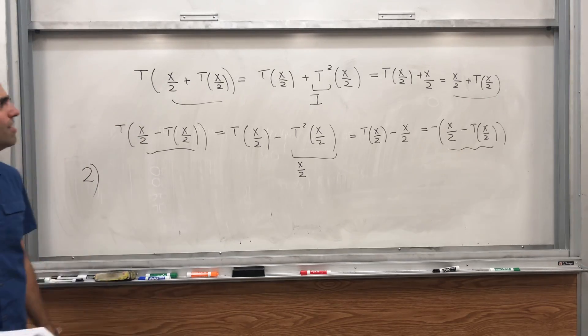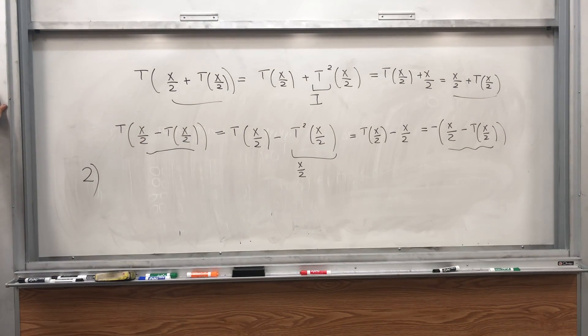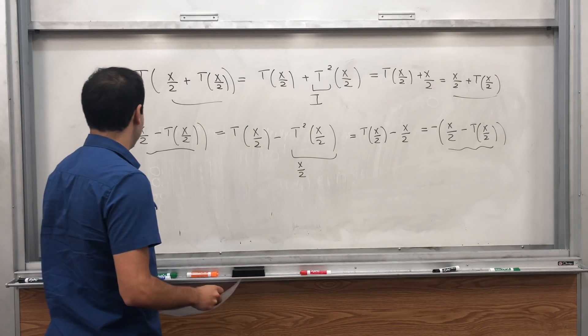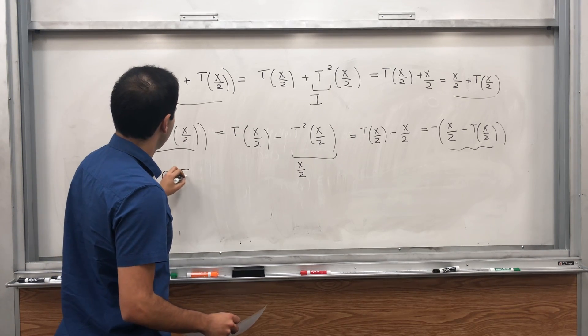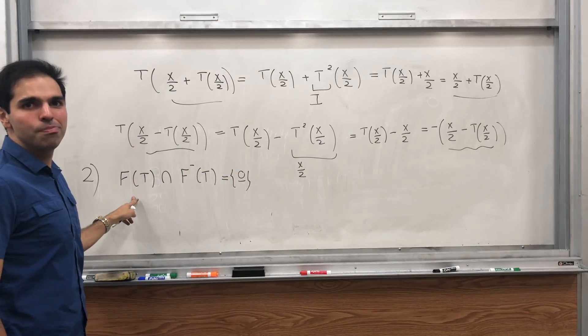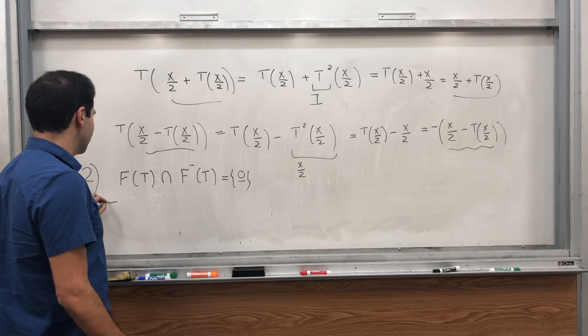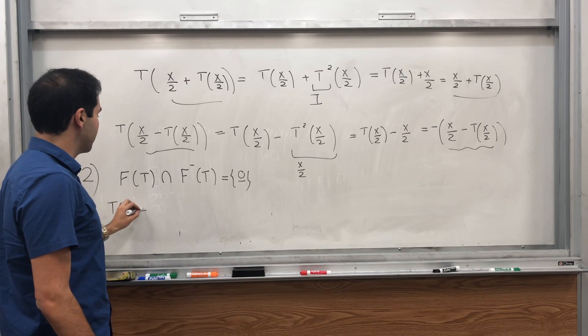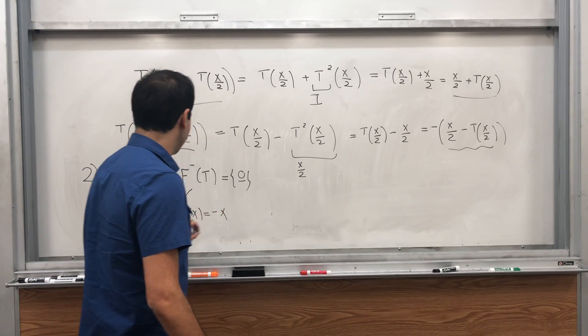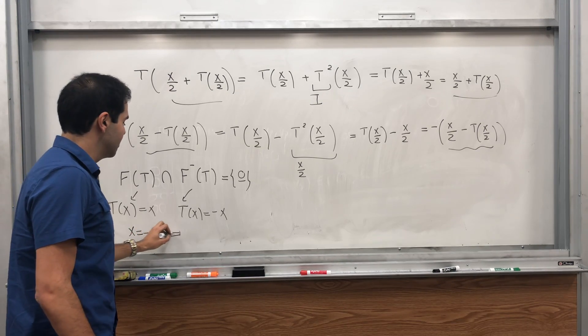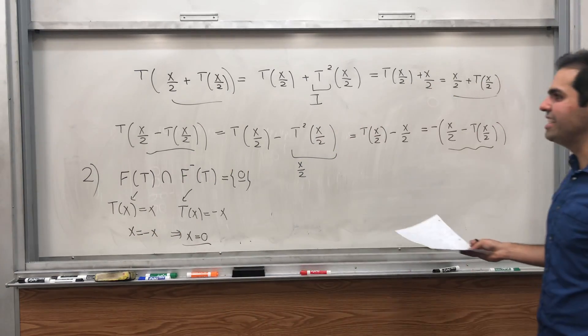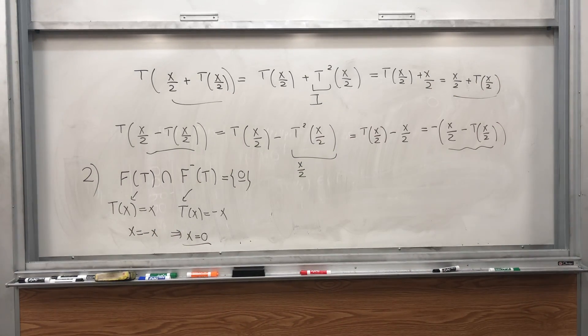I should have called it AF, it's anti-fixed point AF. And we just need to show that the intersection is empty. It's not empty, but the zero vector. But that's not too bad. Suppose x is in both spaces. Then on the one hand T(x) equals x, but on the other hand T(x) equals minus x, so x equals minus x, so x equals 0.